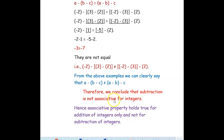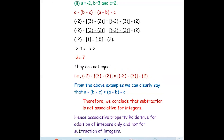Therefore, we can conclude that subtraction is not associative for integers. Hence, the associative property holds true only for addition of integers and not for subtraction of integers. Hope you have understood how to verify the associative property for addition and subtraction of integers. Thank you for watching this video.